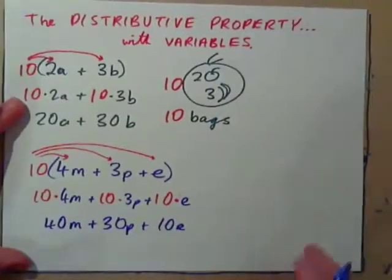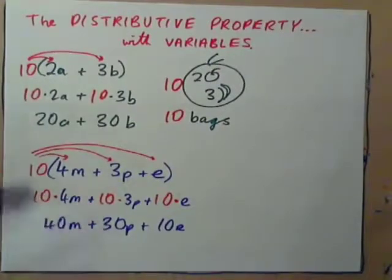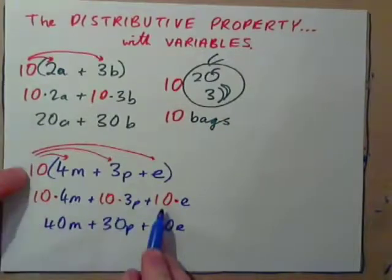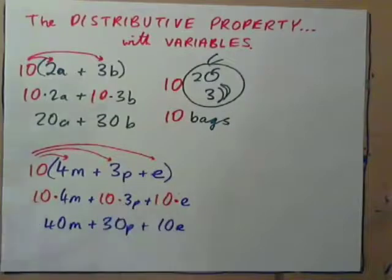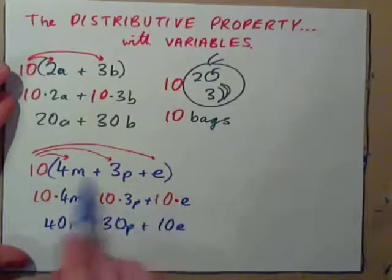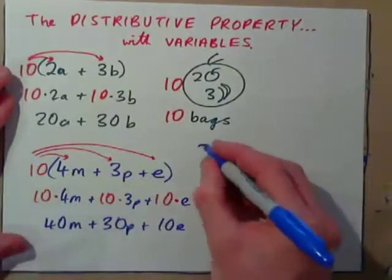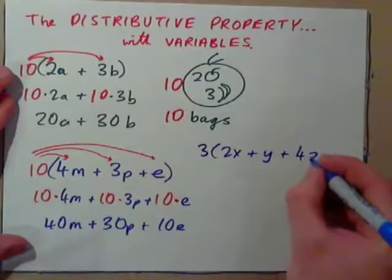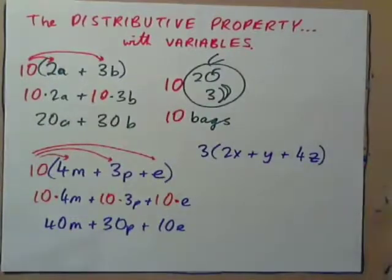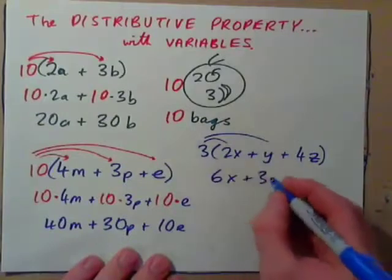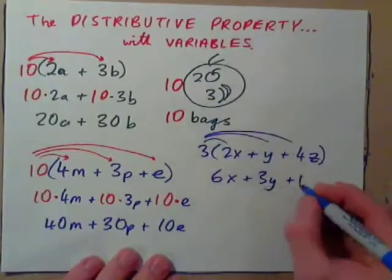Sometimes you'll see that you started with one number in front, but end up with multiple terms — that's what happens when you apply the distributive property. It gets multiplied by each term inside the parenthesis. So for example, 3 times (2x plus y plus 4z): 3 times 2x is 6x, 3 times y is 3y, 3 times 4z is 12z.